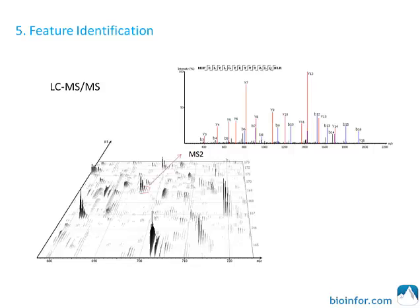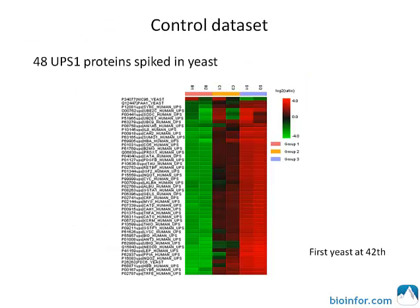How well does PEAKS label-free quantification perform? Here is the result from a controlled dataset from an Orbitrap instrument. Samples B, C, and D were spiked with a yeast mixture of 48 UPS1 proteins, each sample three-fold higher than the last one. The samples were analyzed by mass spectrometry in replicate.